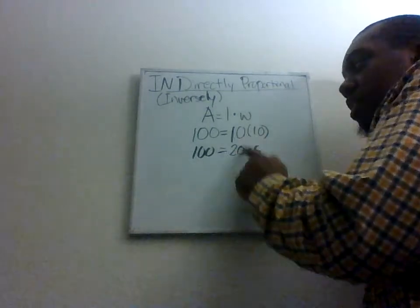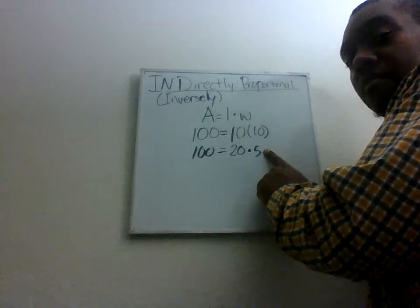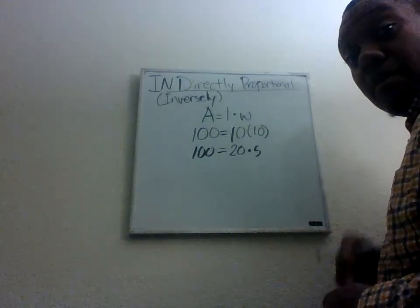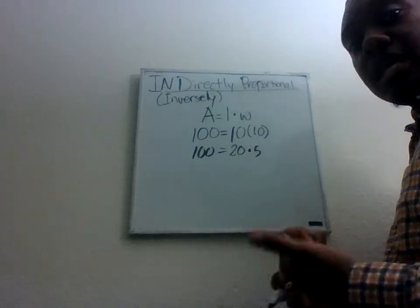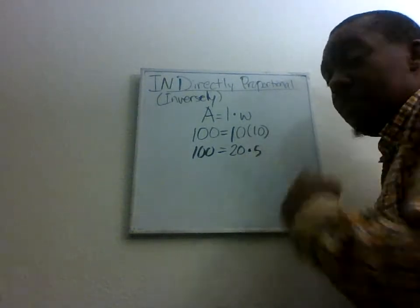Or where did the 5 have to come from if this doubled by 2? So in other words, we multiply it by 2. Where did we get the 5 from? That's right, we must have divided by 2. Remember, going opposite. Multiplication and division are inverses of each other. So we multiply it by 2 to get this, we must have divided by 2 to get that.